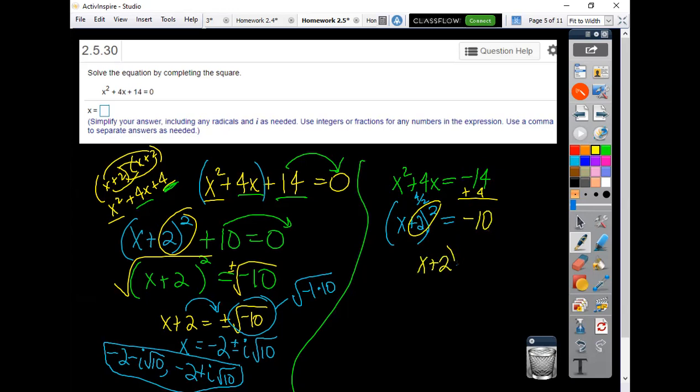So I've got x plus 2 quantity squared equals negative 10. Square root both sides to get rid of the square, giving me x plus 2 on the left. The square root under the square equals the positive or negative.